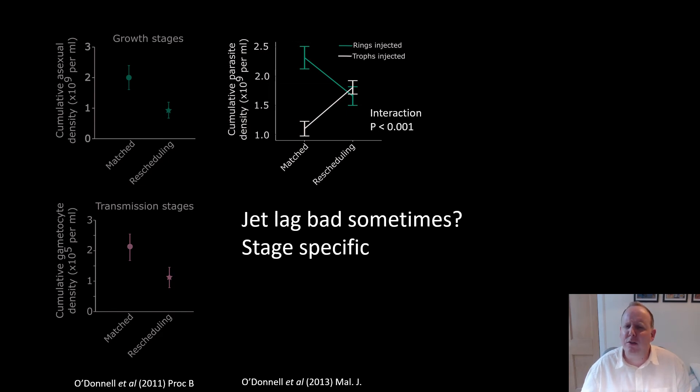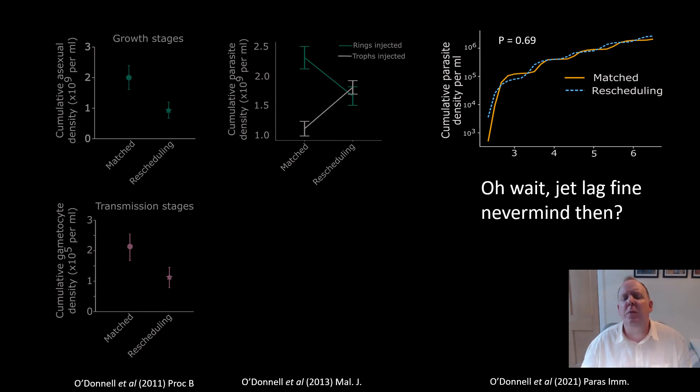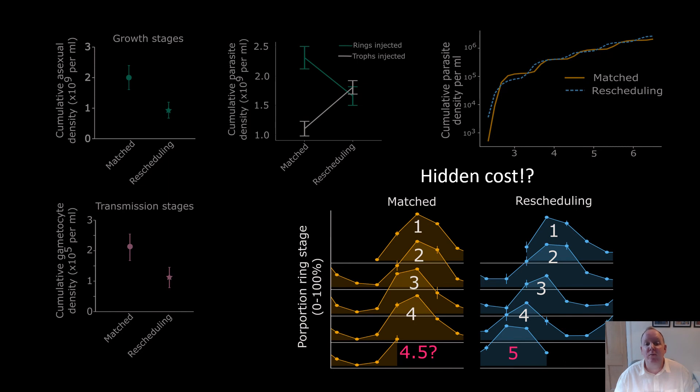And then I did more experiments. And I found that when looking at cumulative parasite densities of the infections tracked for multiple days, I found that I didn't see any apparent differences between matched or rescheduled parasites at all. But when you look back at the ring stage proportions, we can see that while the matched groups go through just over four cycles, the rescheduling groups are ahead due to their shorter IDC, and have completed five full cycles. Given at this point in the infection, parasites are growing exponentially, we should see higher numbers in the rescheduling group. But we don't, suggesting there may be some hidden costs of rescheduling.